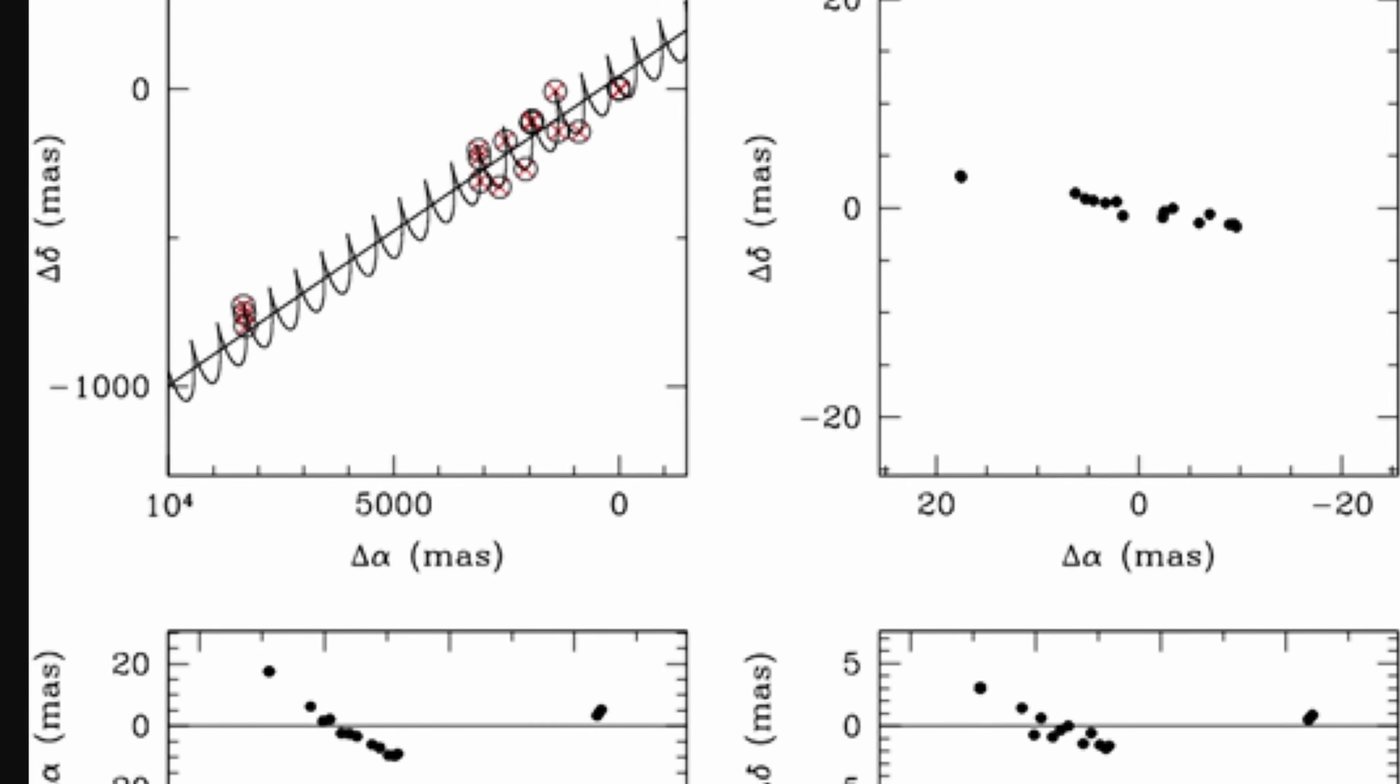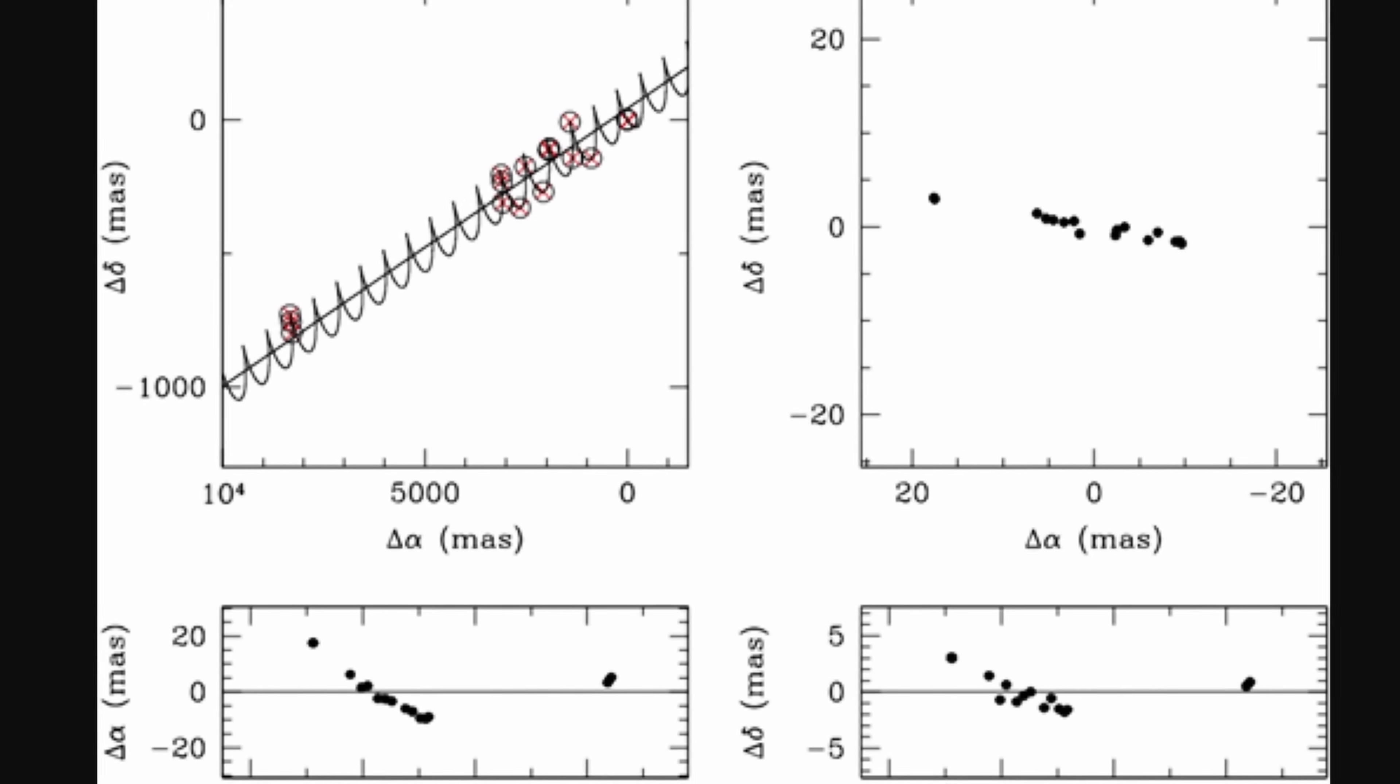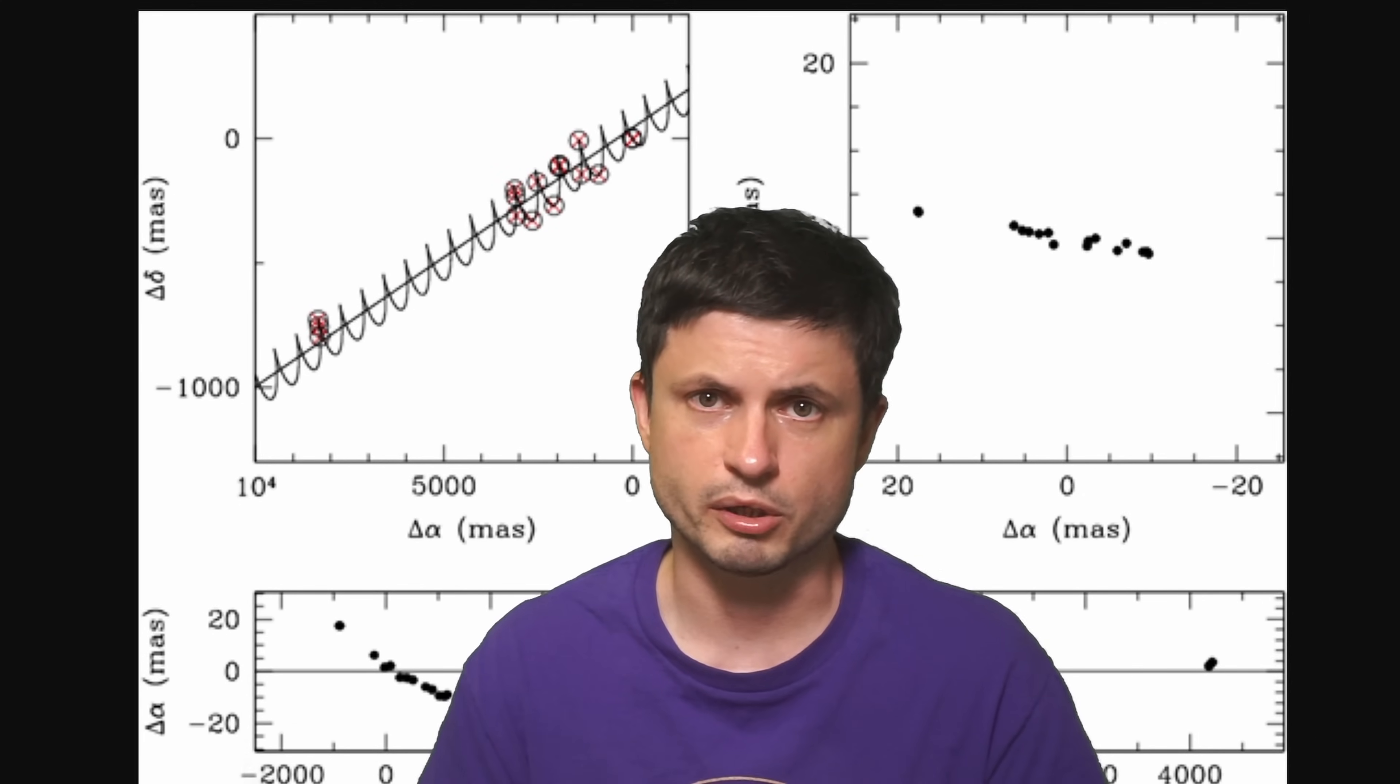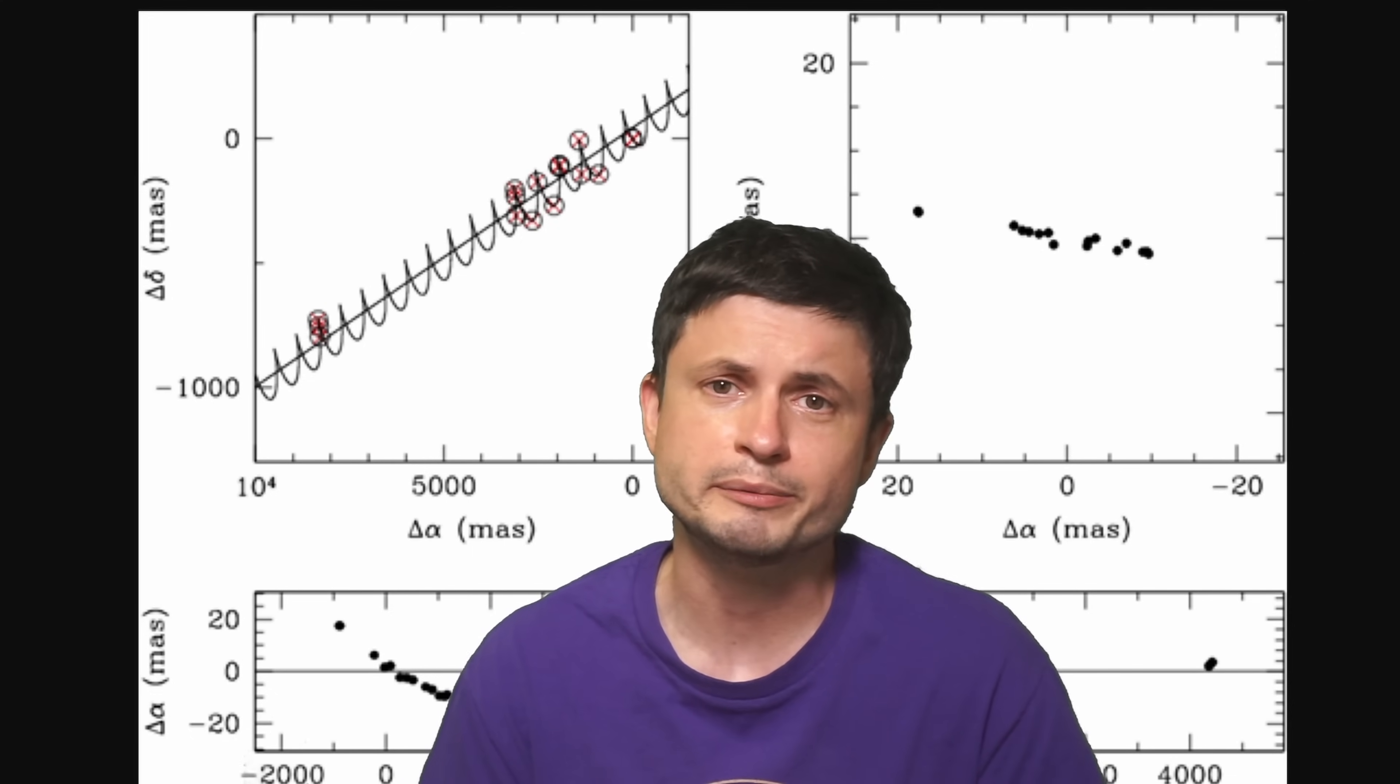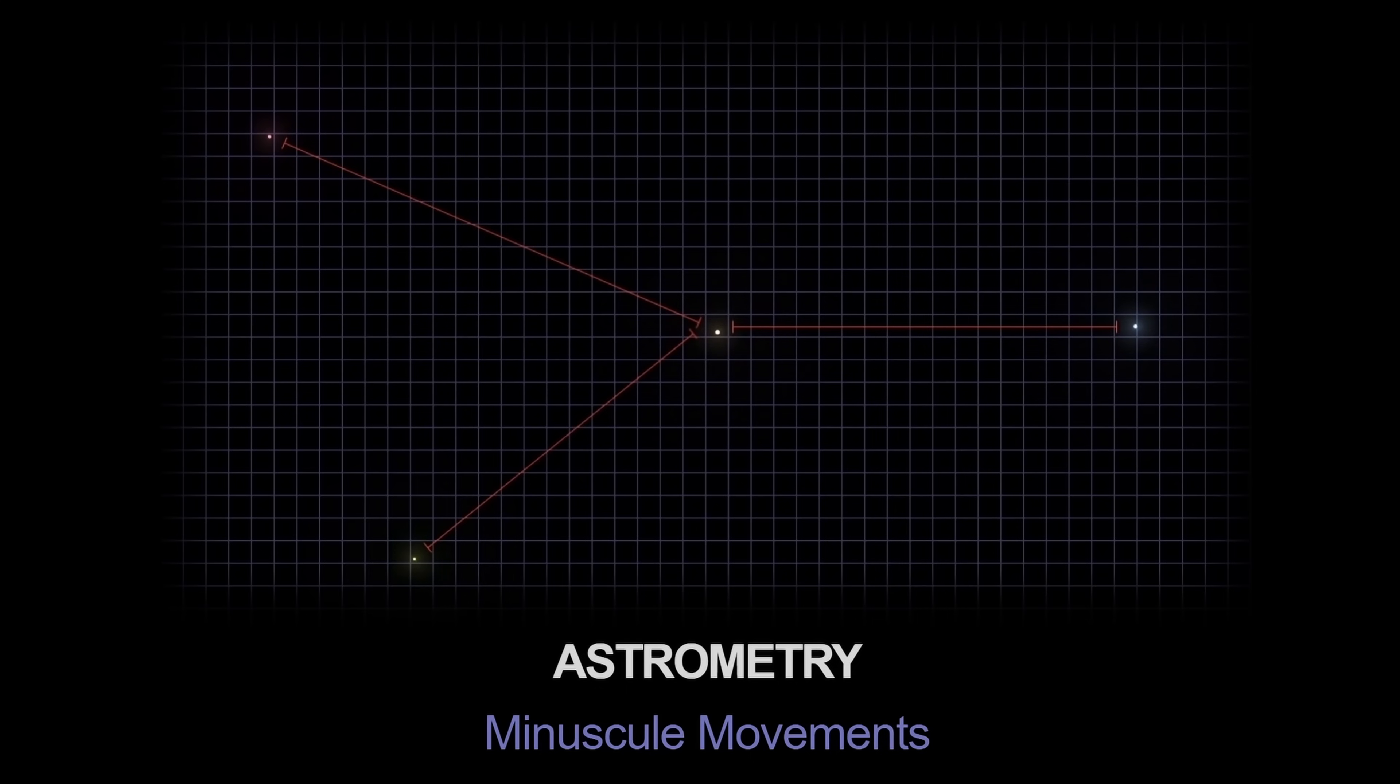But because the orbits here take so long, they actually had to rely on some of the older data going back as far as 1941. But by using the modern data from the VLBA, they were then able to create an extremely accurate map of the motion of the star in the night skies. And so using this astrometry method, to their surprise, they found a planet orbiting around one of the stars.